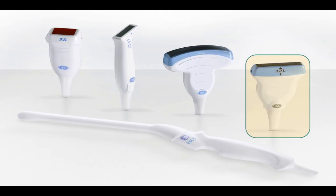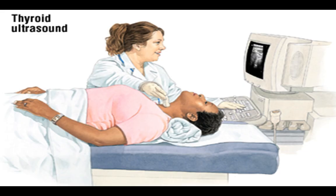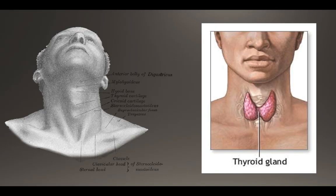When you scan the thyroid you want to use a linear probe. The thyroid is a superficial structure and the high frequency of this probe will get you good image resolution. The patient should be in a supine position with their neck extended, and it may help to place a pillow under the patient's shoulder blades to enhance neck extension and positioning — this can be really useful in patients with a shorter neck. You start the scan with the probe right above the sternal notch. The probe indicator should be to the patient's right when in the transverse plane and towards the patient's head when in the longitudinal plane. To visualize the entire thyroid it will probably be necessary to slide the probe laterally and fan cranially and caudally.